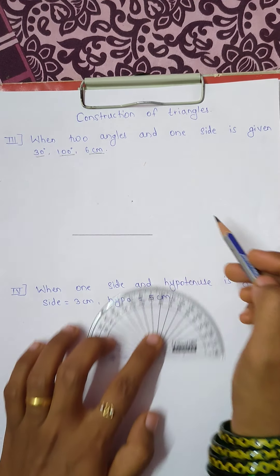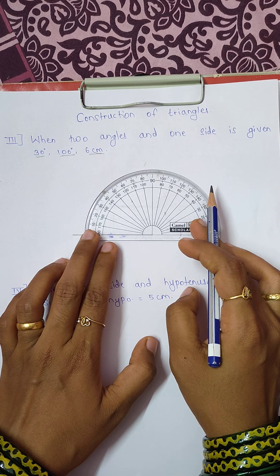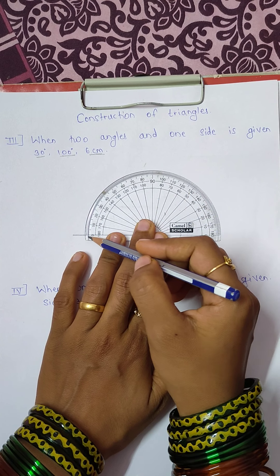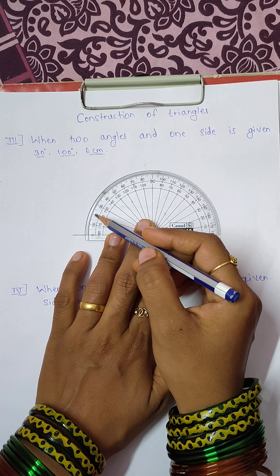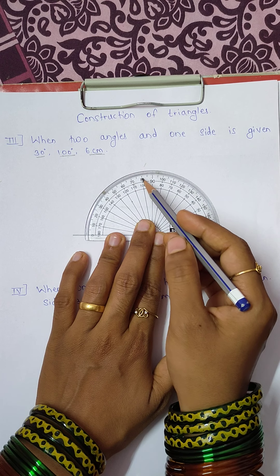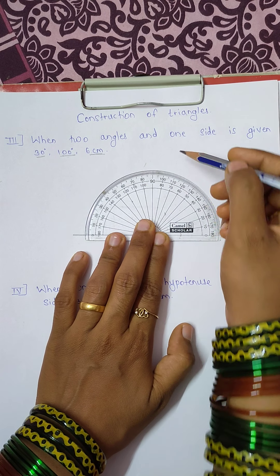Another side we will draw 100 degree angle. 10, 20, 30, 40, 50, 60, 70, 80, 90 and 100.